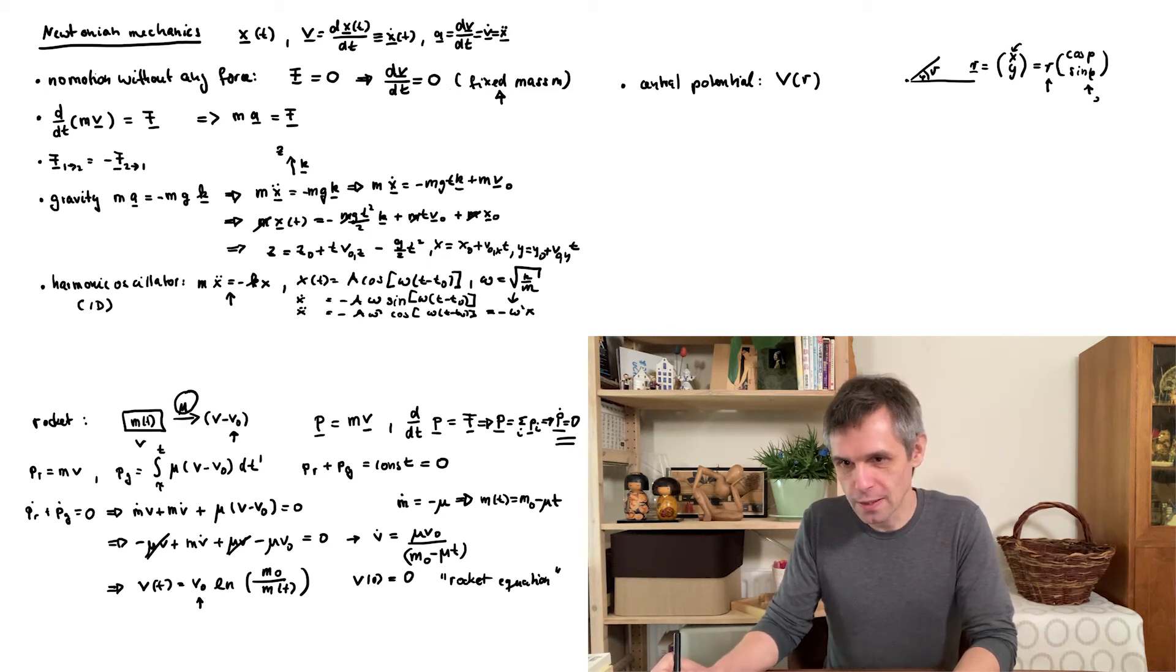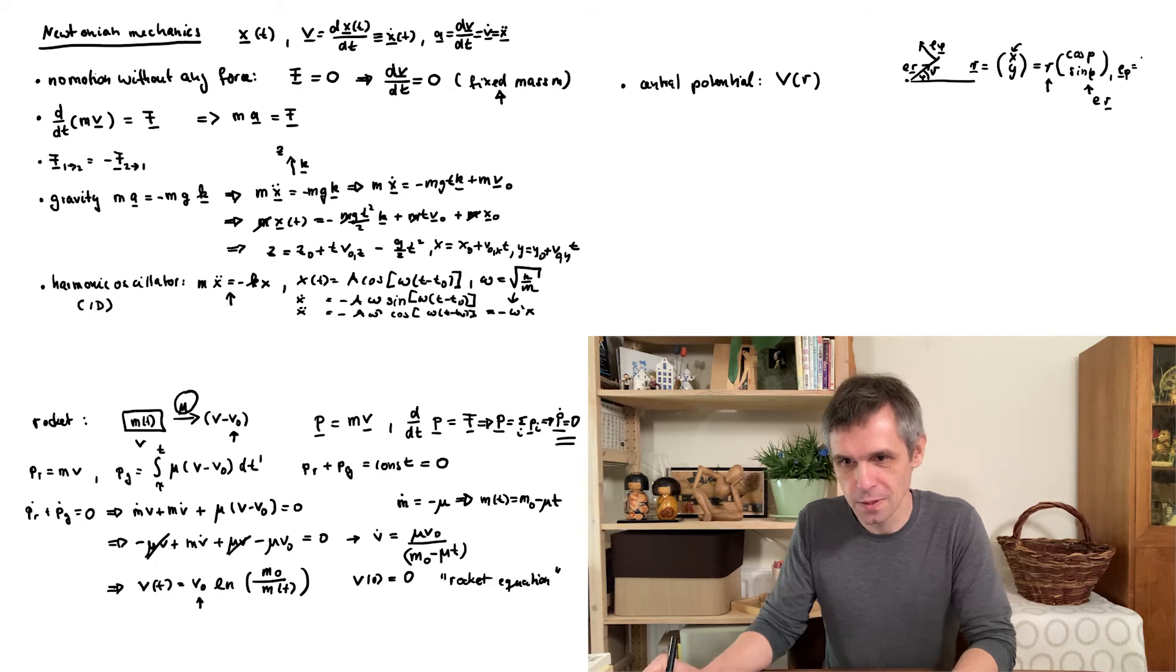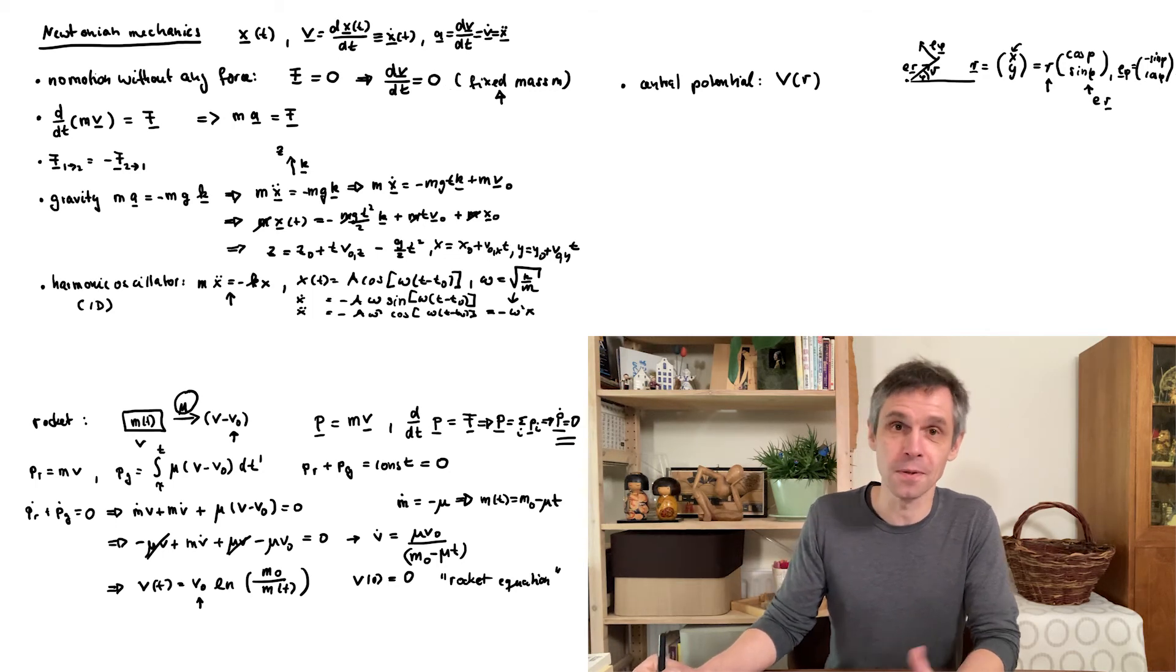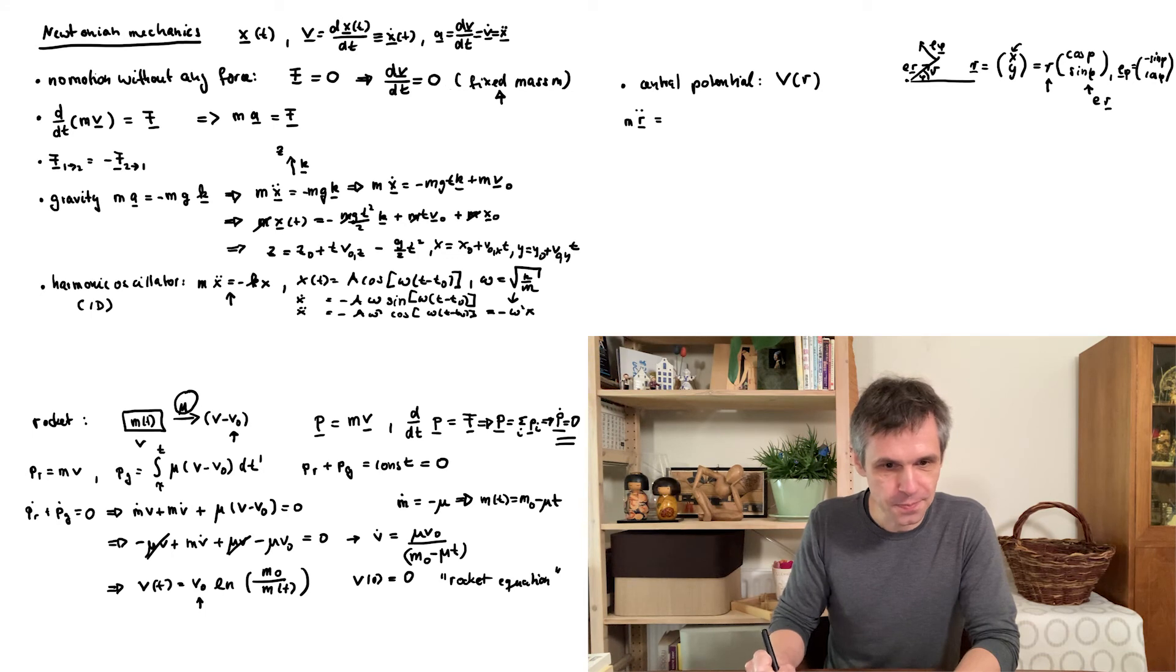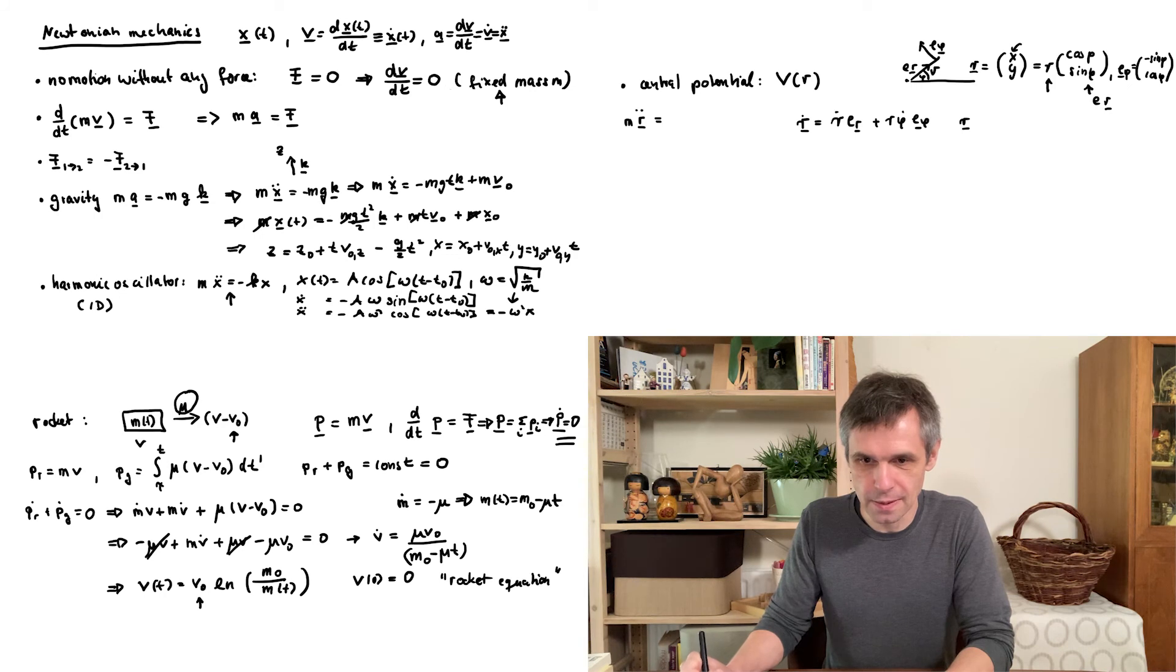And I'm going to call this unit vector here er because it points into the direction of the radial coordinate. So this unit vector would point in this direction here. And I'm also going to introduce another unit vector which is given as minus sine phi and cosine phi. So this is just another orthogonal direction. And if you now simply start from Newton's equations of motion, well then we need to work out these derivatives. Now r dot can be written as r dot er plus r phi dot e phi, simply by taking derivatives and using our definitions. And the second derivative can then be written in the following way.